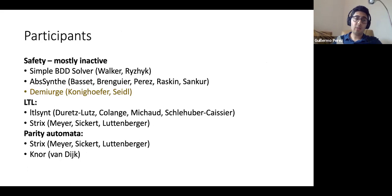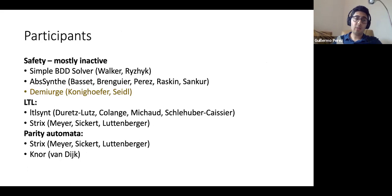So this is the list of people who participated this year for the safety track, which has remained mostly inactive. I have to say for the last couple of years, we had a simple BDD solver. We had absent and demiurge. Demiurge has mostly been abandoned since 2014, but we decided to revive the code ourselves because it actually gives pretty small circuits when it works for synthesis. So we're going to support it ourselves just to have it as a reference. For LTL benchmarks, we have LTL synth. So that's a part of spot. And we have Strix, which is based on OWL and it's coded by TUM. And for the new parity automaton track, we have two participants. We have Strix, so an adaptation of Strix, which starts from the parity game level and not from LTL. And we also have Knorr, which is coded by Tom van Dijk. And it's essentially a wrapper around Oink, which is a comparison of several parity game algorithms.